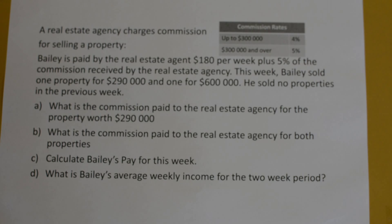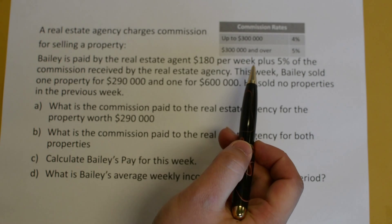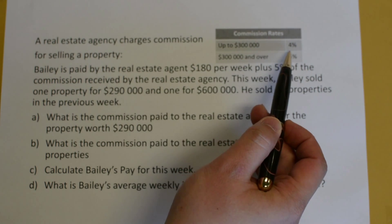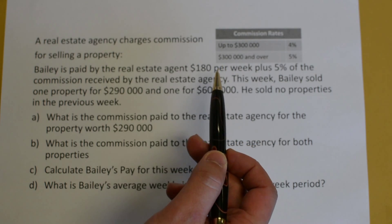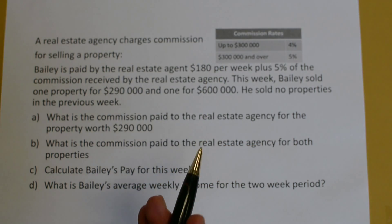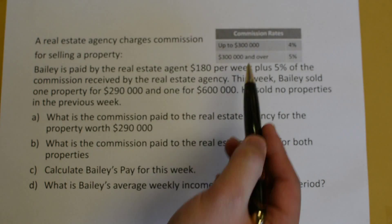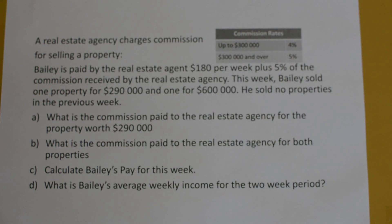This next example is a bit more involved. A real estate agency charges commission for selling a property, with details shown in the table. For properties up to $300,000, the commission rate is 4%, and for properties $300,000 and over, the commission is 5%. Bailey is paid by the real estate agency $180 a week plus 5% of the commission received by the agency. This week, Bailey sold one property for $290,000 and one for $600,000.